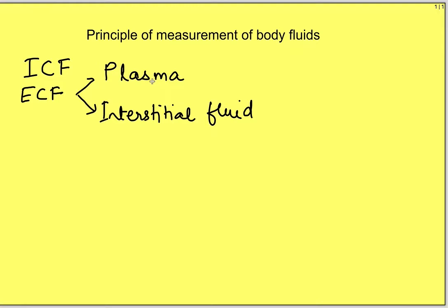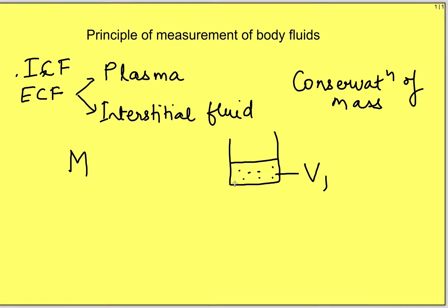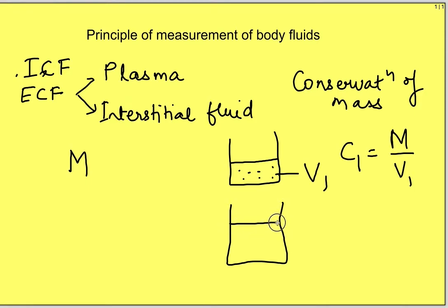The distribution of body fluid in various compartments can be measured by applying the principle of conservation of mass. It is a very simple principle. Suppose we have a known amount of a substance, say mass m, mixed in a solvent of known volume v1. The concentration is mass divided by v1. If mixed in another container of volume v2, the new concentration is mass divided by v2.